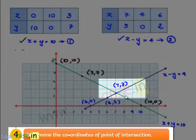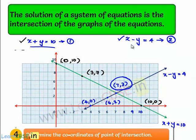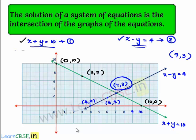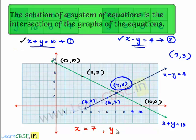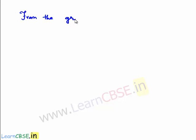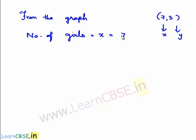If we observe, both of these straight lines meet at a common point which is 7 comma 3. So the point of intersection of the straight lines x plus y equals 10 and x minus y equals 4 is 7 comma 3. Now we can say the value of x is 7 and the value of y is equal to 3. x is the number of girls and y is the number of boys, so graphically we found x equals 7 and y equals 3. Therefore, from the graph, the number of girls is equal to x which is 7, and the number of boys is y which is 3.